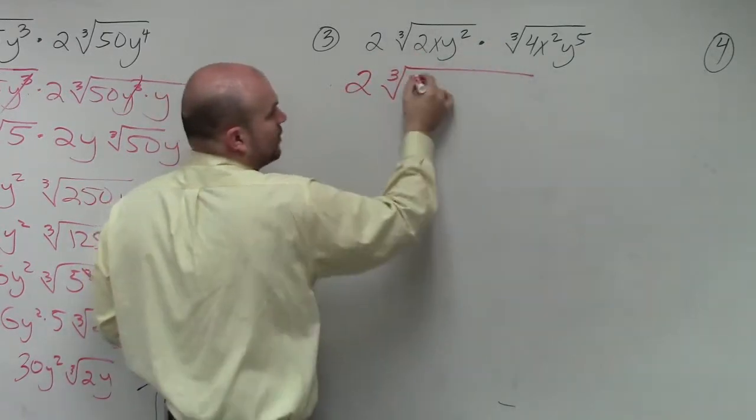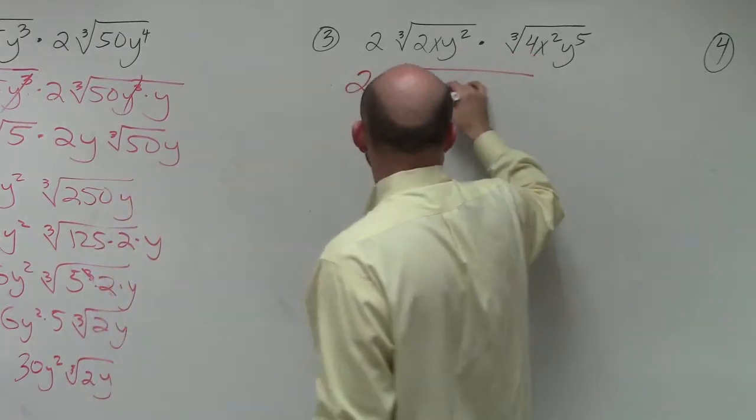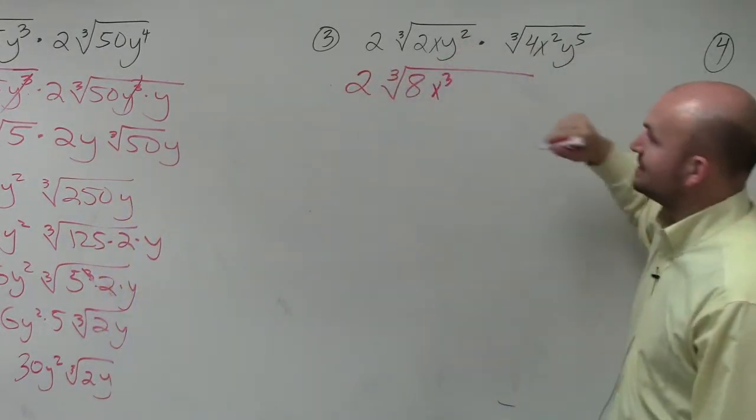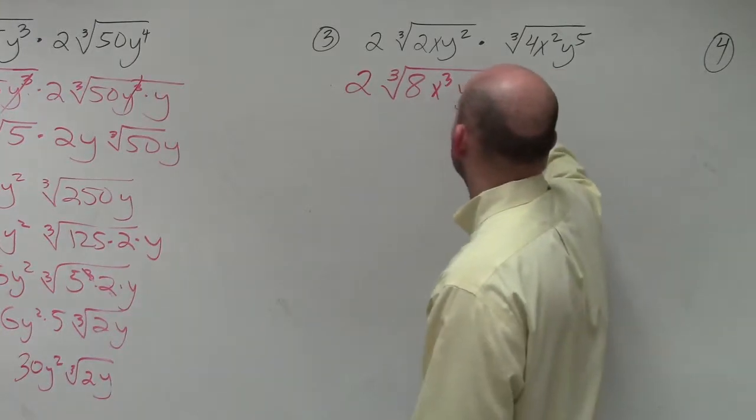And basically, I have two times four, which is eight. x times x squared is x cubed. And y squared times y to the fifth is going to be y to the seventh.